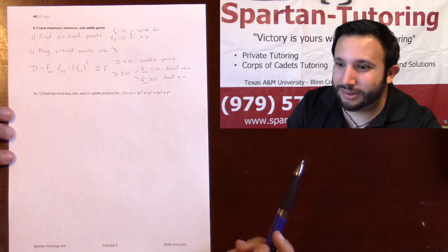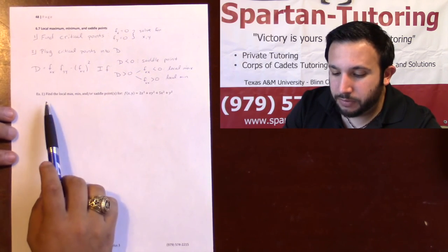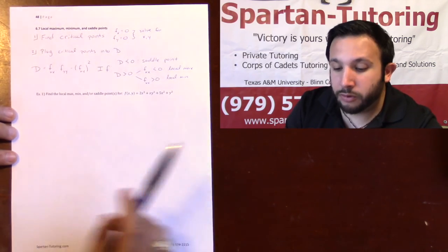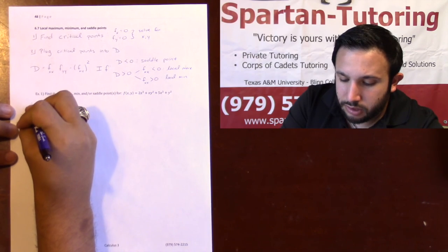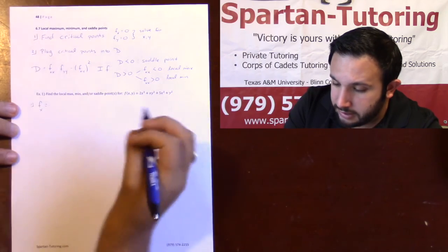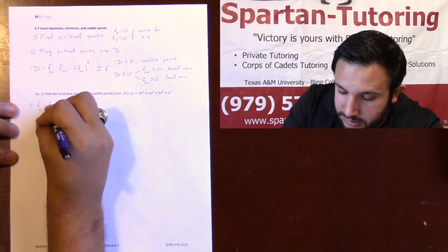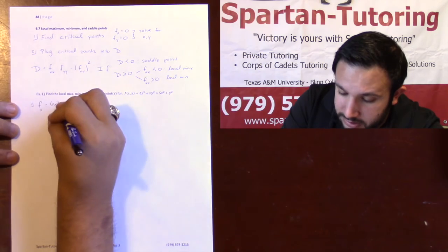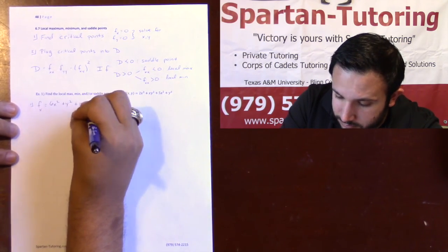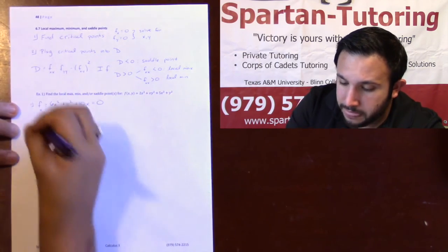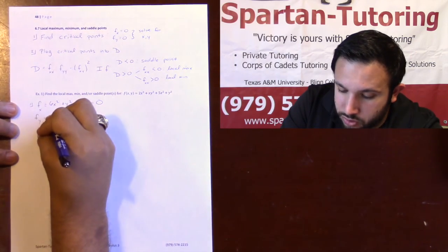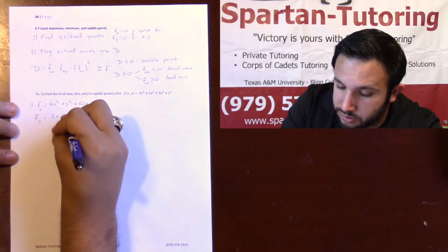Let's find the local maxes, mins, and/or saddle points for the following function. Step one: find our critical points. So fx equals 6x squared plus y squared plus 10x, set equal to zero. And fy equals 2xy plus 2y, set equal to zero.